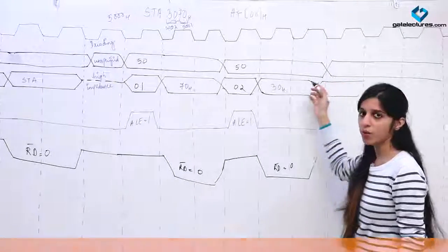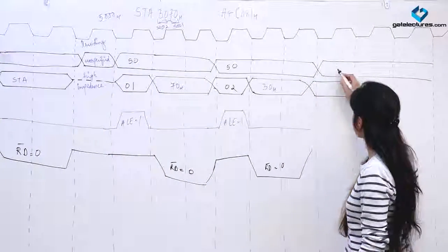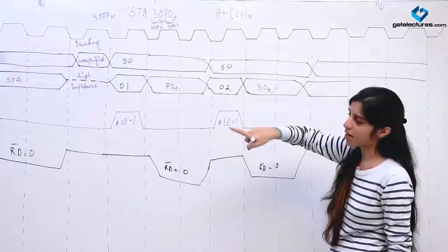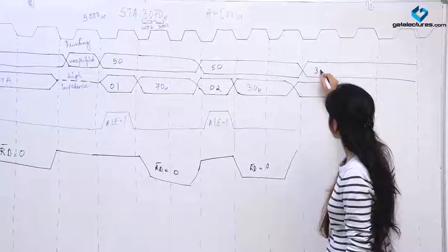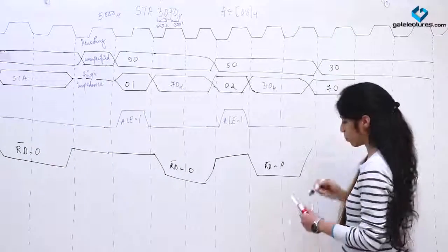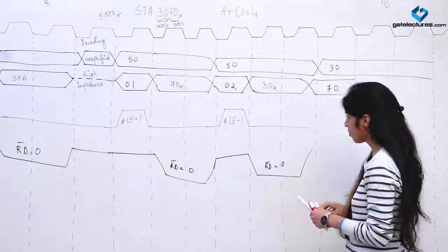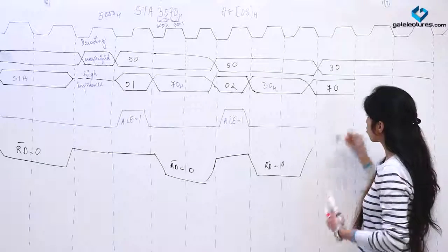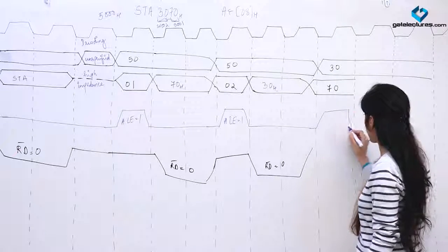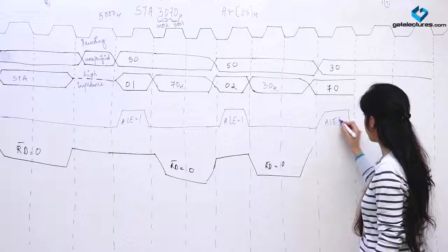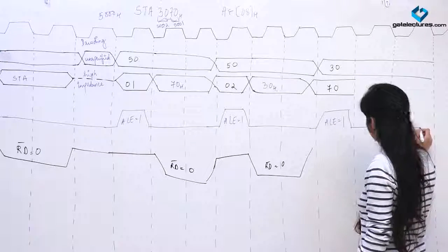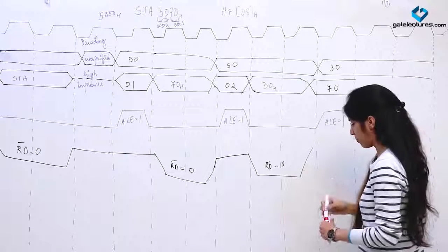In the next cycle, what are going to be the contents of the address lines? The upper bits of the address line are going to hold 30 and the lower bits are going to hold 70. For this to act as address bus, I am again enabling the Address Latch Enable.